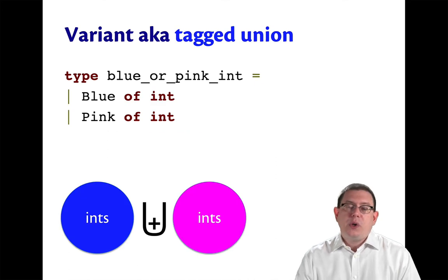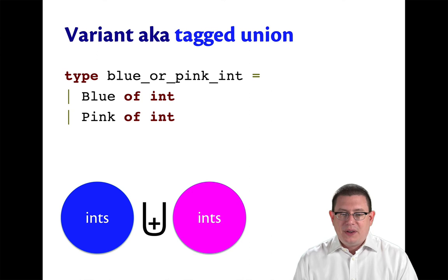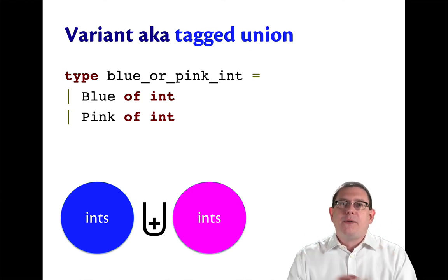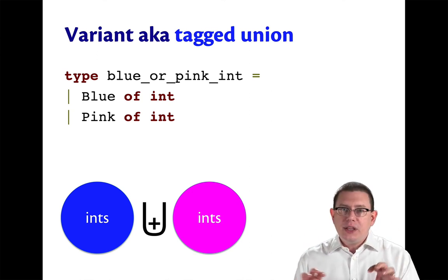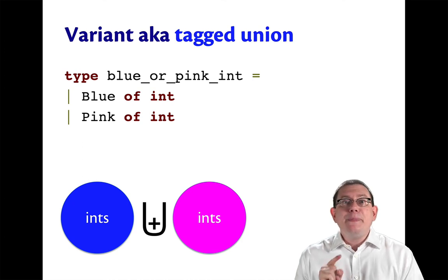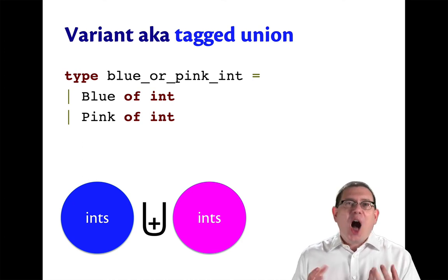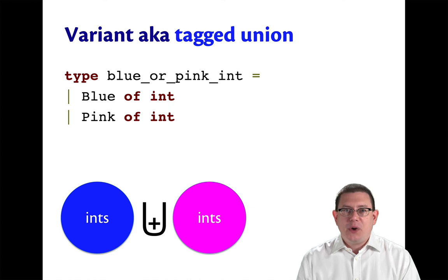But suppose we wanted to create something that is either a blue or a pink int. Now we're taking sort of two copies of the set of all integers and uniting them together, but keeping track of which copy, as it were, the value came from. It was either the blue integers or the pink integers. That's what the tag tells us.